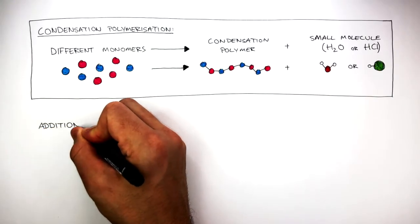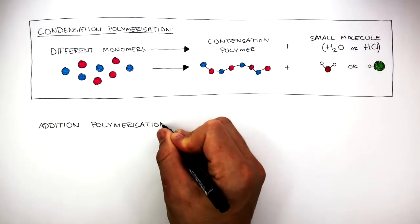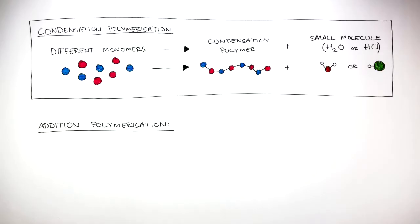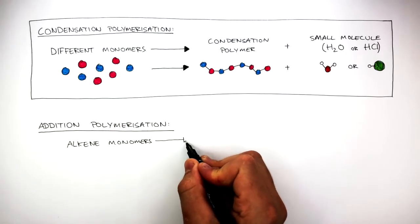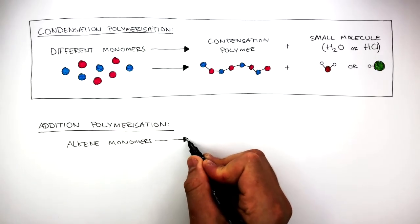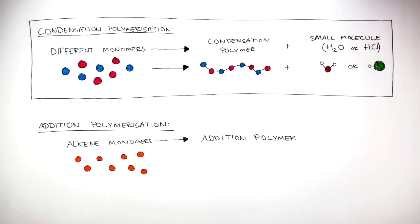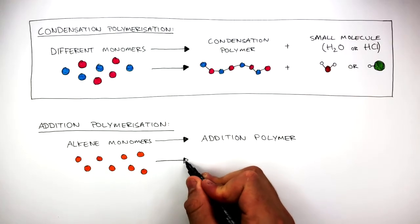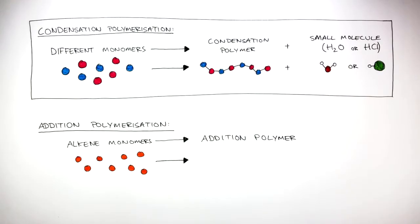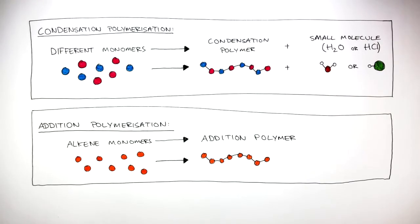Whereas addition polymerization is when alkene monomers react together to form an addition polymer. These red circles represent how there are the same monomers and they react together to form a polymer — normally just one polymer. There are no other products.